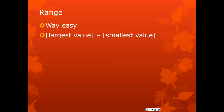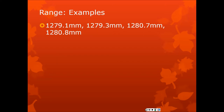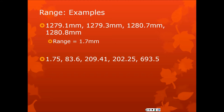The first measure of variability we want to look at is the range. The range is extremely easy to calculate — it's just the largest value minus the smallest value. Sometimes people will say the range is from the smallest to the largest, like the age range was from 2 to 12 years old. But more technically correctly, we would say the age range is 10 years. The range is a single number — a difference between two numbers, not the values themselves. For example, with lengths in millimeters, the range is 1.7 millimeters. With another set of numbers, the range could be almost 700, whatever units they are.